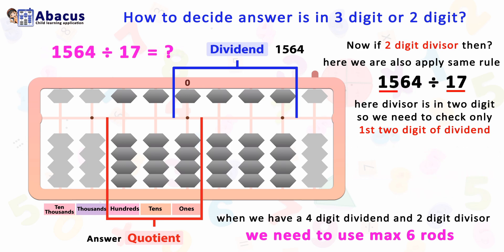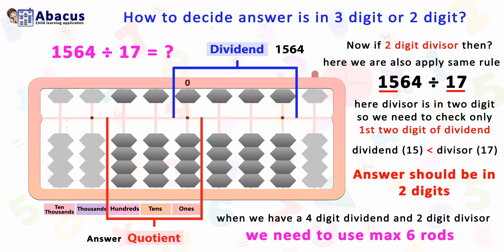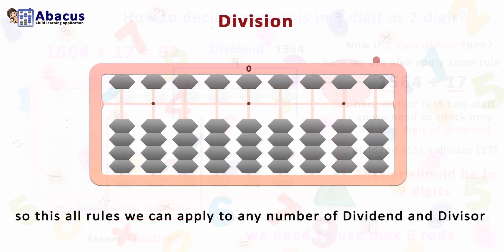Now what happens if the divisor is greater than the dividend's leading digits? Here is an example: 1564 divided by 17. The divisor is 17 and the first two digits of the dividend are 15. Since the divisor 17 is greater than 15, our answer should come in two digits. These rules can be applied to any number of dividend and divisor digits to get the answer of division.